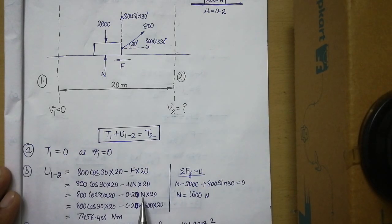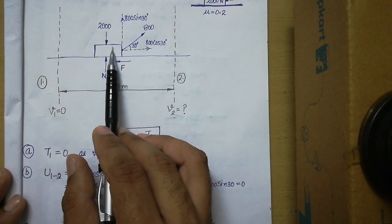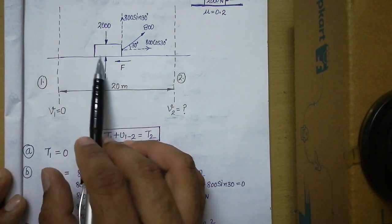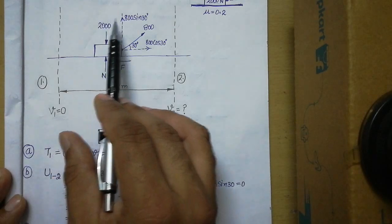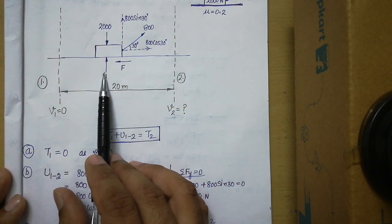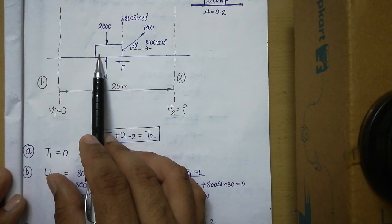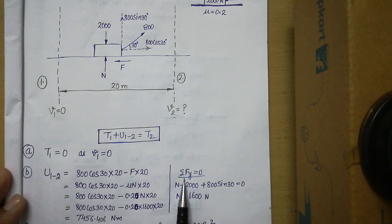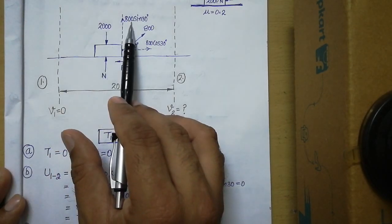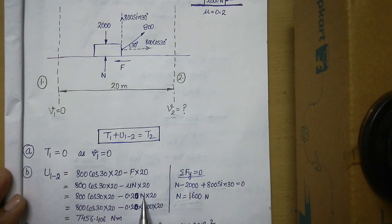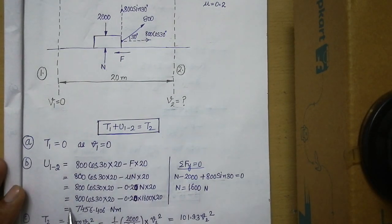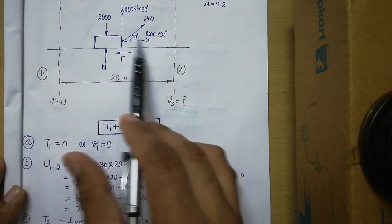We replace the friction force by μN, where μ is given as 0.2, but N is unknown and must be calculated. Since the block does not move along the vertical direction, we apply ΣFy = 0. Taking upward forces as positive: N plus 800 sin 30 minus 2000 equals zero. From this equation we get the value of N, and substituting gives us the work done from Stage 1 to Stage 2 due to the forces acting on the object.